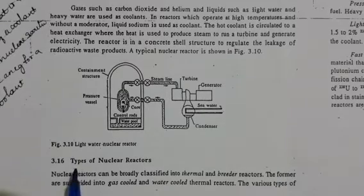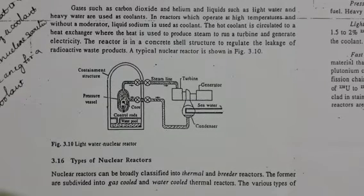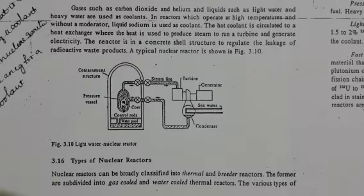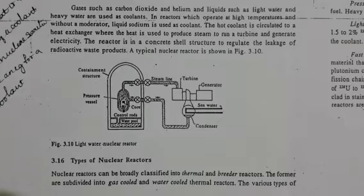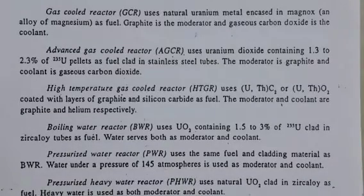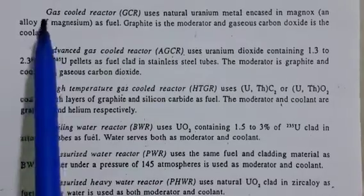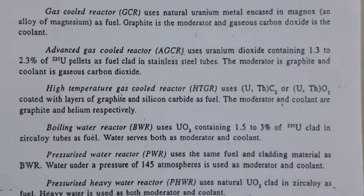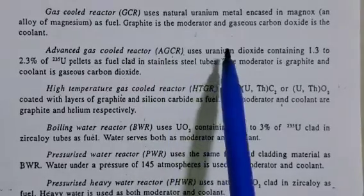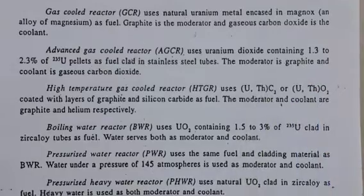Let us discuss about the types of nuclear reactors. Nuclear reactors can be broadly classified into thermal and breeder reactors. Thermal reactors are further subdivided into gas-cooled and water-cooled thermal reactors. The gas-cooled reactor uses natural uranium metal encased in magnox — an alloy of magnesium — as the fuel. Graphite is the moderator and gaseous carbon dioxide is the coolant.